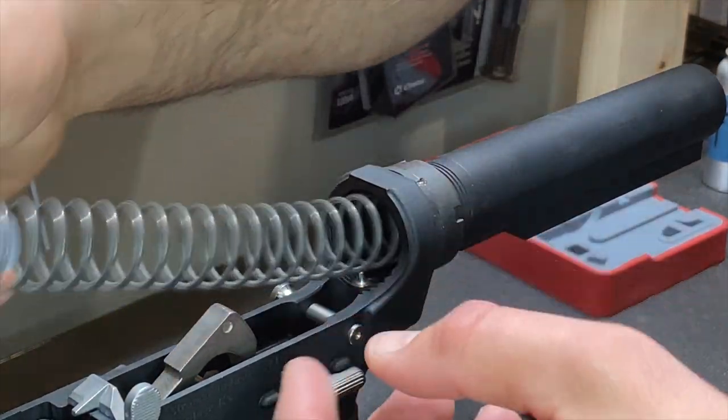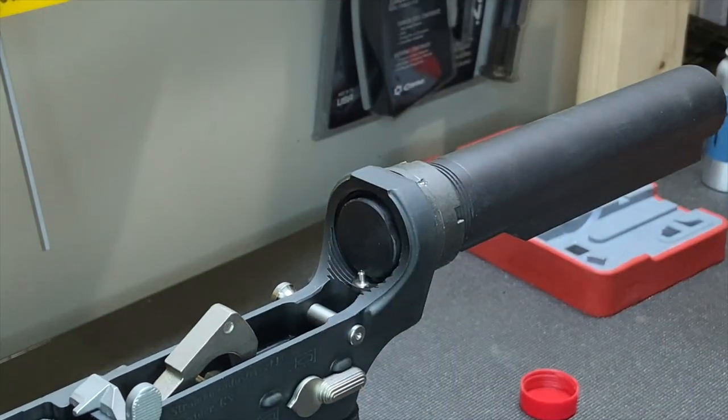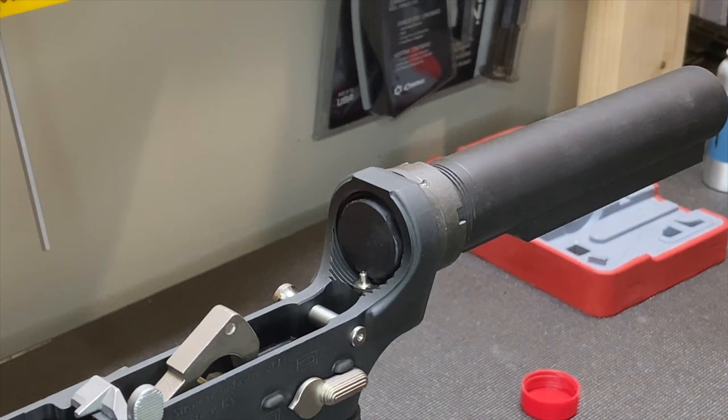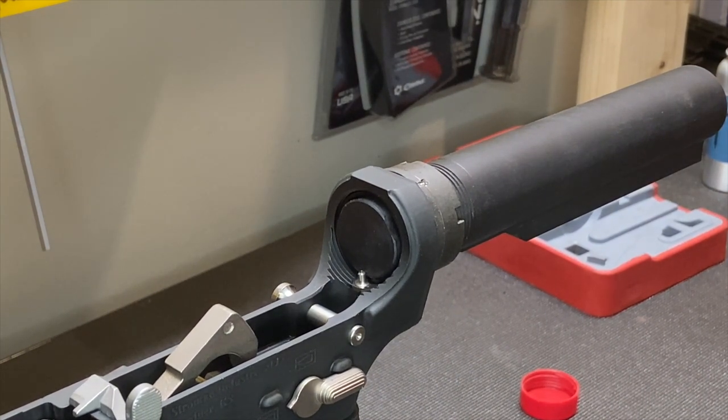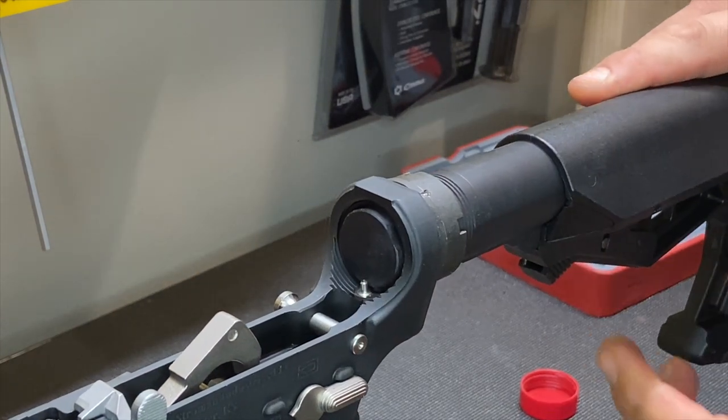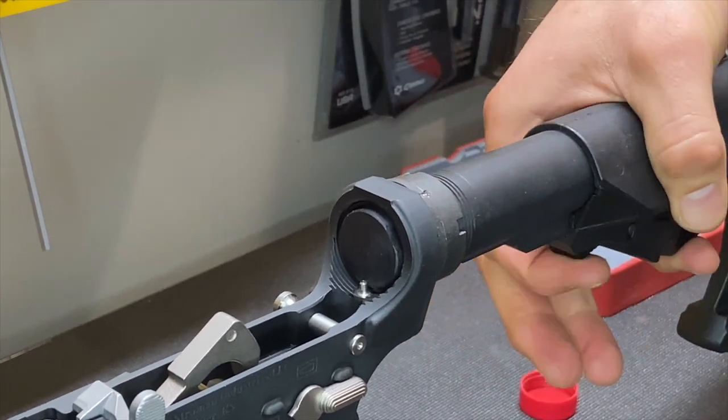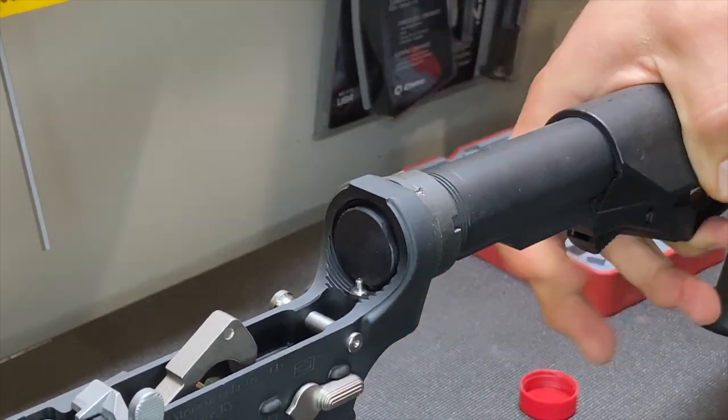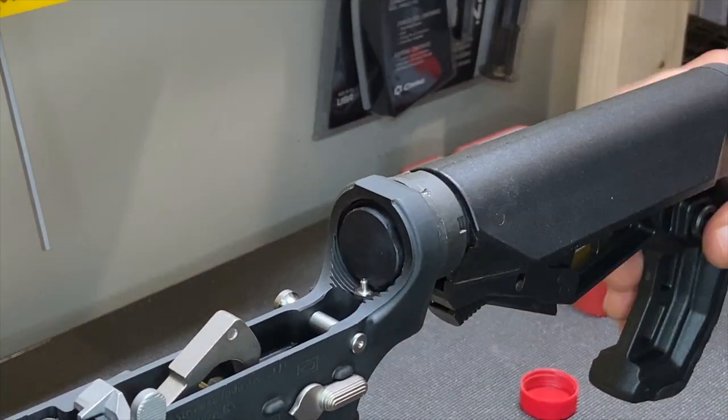Now this is super easy to put in there. Make sure your buffer is facing forward, there we go. And I'll go ahead and do the stock. Slide all the way on, click it in place. Now we have our adjustments, super easy. And it's not going to fall off unless you do the same thing to remove it. So our stock is on.